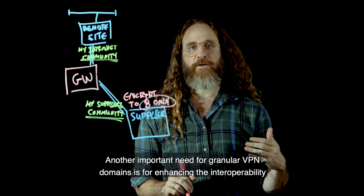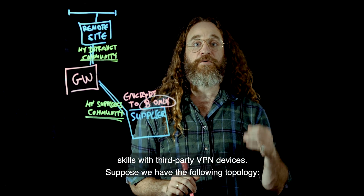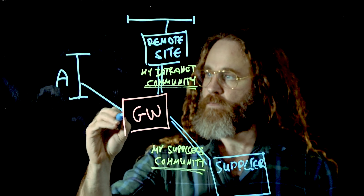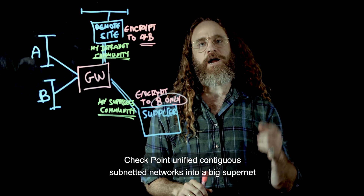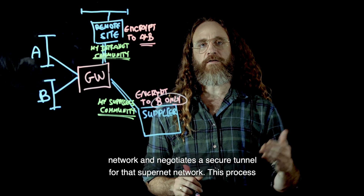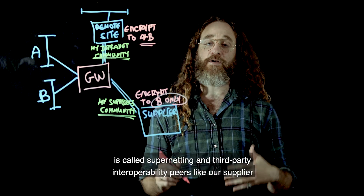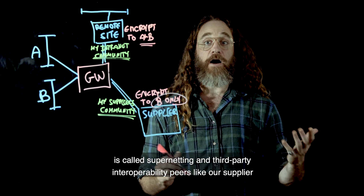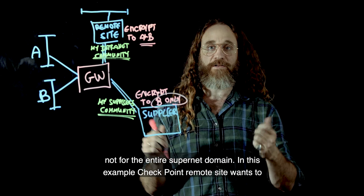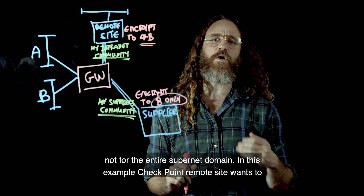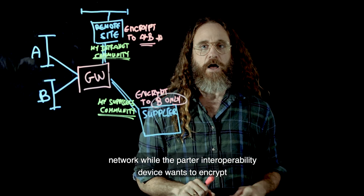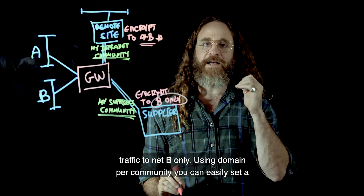Another important need for granular VPN domains is for enhancing interoperability with third-party VPN devices. Suppose we have the following topology. Check Point unifies contiguous subneted networks into a big supernet network and negotiates a secure tunnel for that supernet network. This process is called supernetting, and third-party interoperability peers, like our supplier partner, are often wanting to establish a tunnel only for a smaller network, not for the entire supernet domain. In this example, the Check Point remote site wants to encrypt traffic to the entire VPN domain of the gateway — for example, A plus B network — while the partner interoperability device wants to encrypt traffic to net B only.